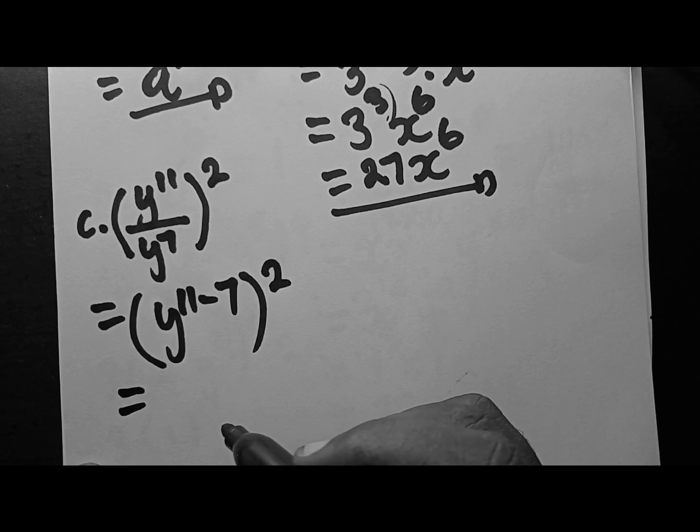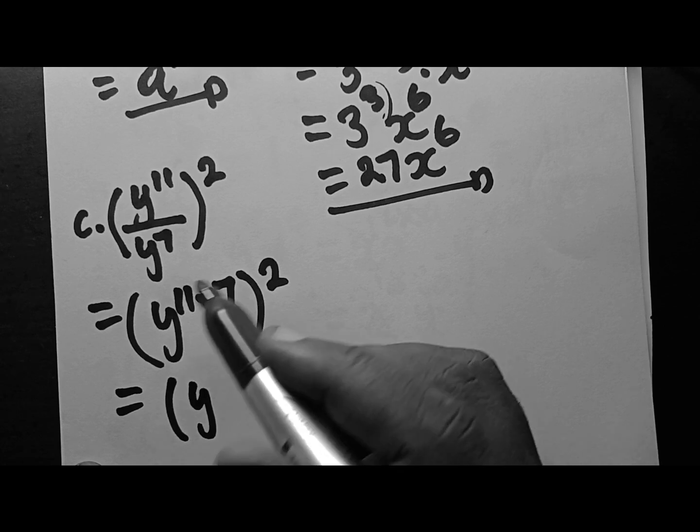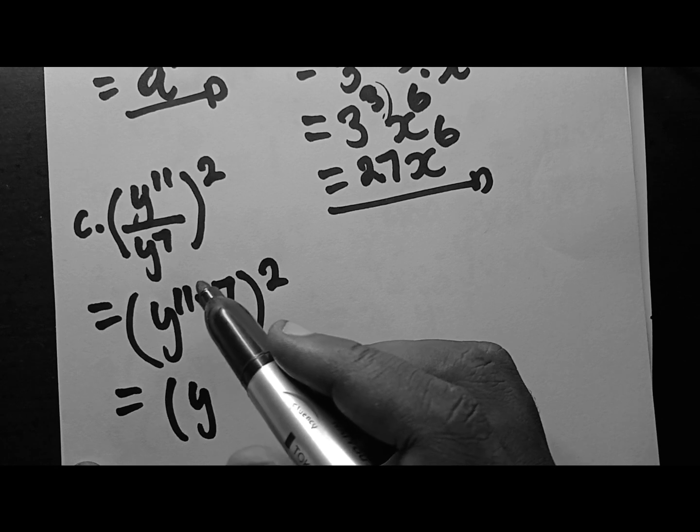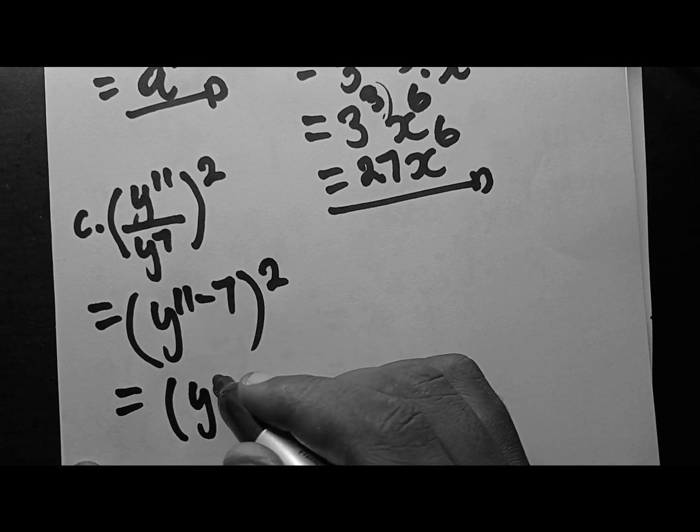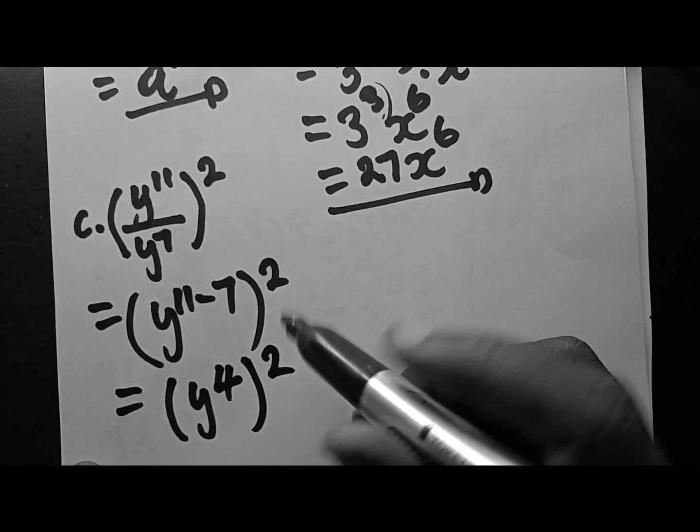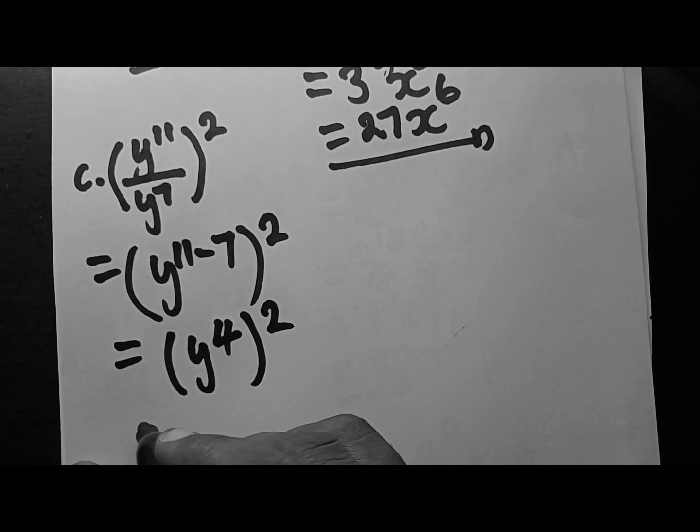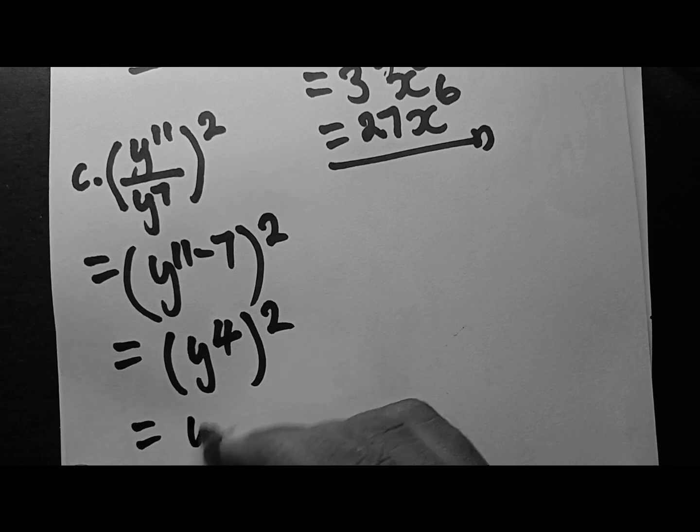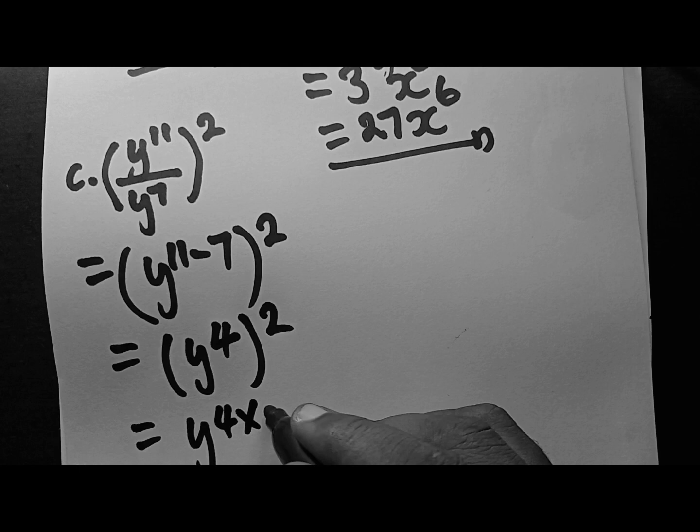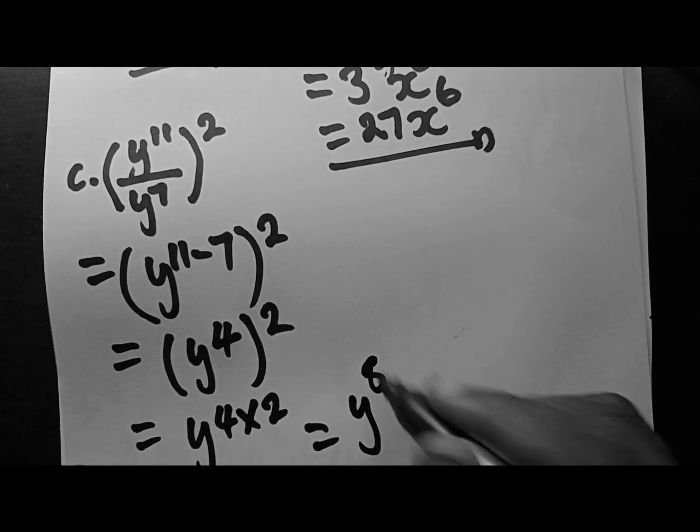We have this rule that says, when you are dividing the same bases, you take as one, and then you only subtract their exponents. Just keep that one outside. And then we have y, 11 minus 7. This is going to be 4. Now we are going to do the one we just did up there. It's 4 times 2, and then your final answer is going to be y to the power of 8.